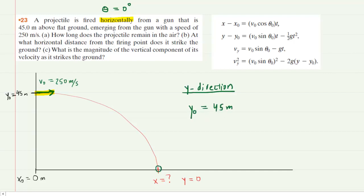Because the projectile hits the ground, we know the final y-coordinate is 0, so we can write y equals 0 meters. We know that the angle is 0 degrees. The initial speed with which the projectile is fired is 250 meters per second.